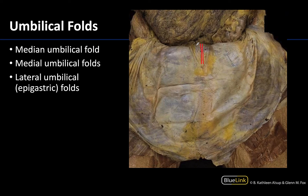In close proximity and just lateral to the median umbilical ligament are the medial umbilical ligaments — I'm going to outline those right here. They are very close to the median both in location and in name.